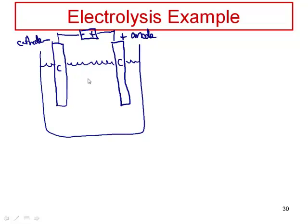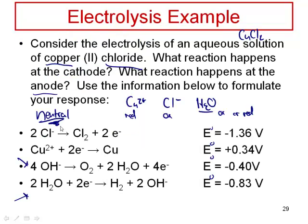If we think about the things we have in solution, we have copper 2+ ions, we have chloride ions, and we have water floating around in here. And by extension, because we have water, we have a very, very low concentration of H⁺ ions, and we'll also have a little bit of hydroxide ions. Those come from the autoionization of water. So let's think about the oxidation half-reaction. If we contemplate these different oxidation half-reactions, here's one possibility — the oxidation of chloride — and here's the other possibility — the oxidation of hydroxide ion that is in solution.